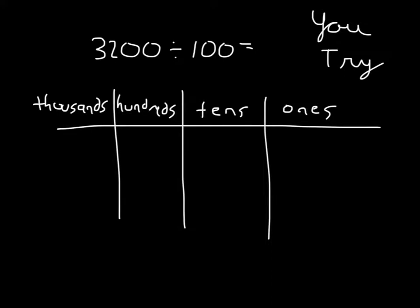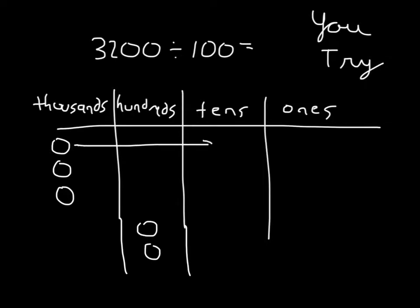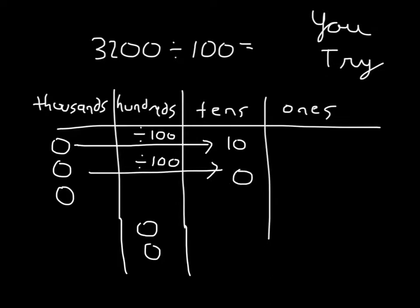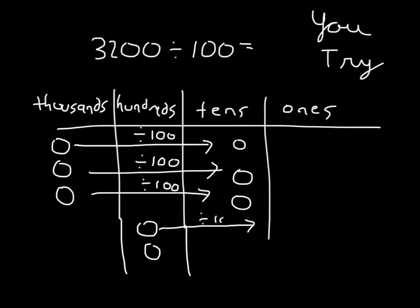Here's the solution. First off, you'd have three thousands and then two hundreds. When you divide a thousand by a hundred, you'd get 10, and the same thing happens with each of these. So 3,000 divided by 100 is 30. Then we'd have each of the hundreds divided by 100, and it moves two places to the right when you divide by 100. So your answer is 32.